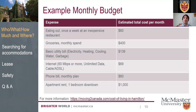A sample monthly budget from the Moving to Canada website shows eating out once a week costs around $60, and groceries can be a significant expenditure depending on your eating habits. Utilities can add up quite a bit — if renting alone, you absorb the full cost, but in a student house with four or five people, that cost is split among everyone. The same goes for internet — if living with others, that cost is shared.